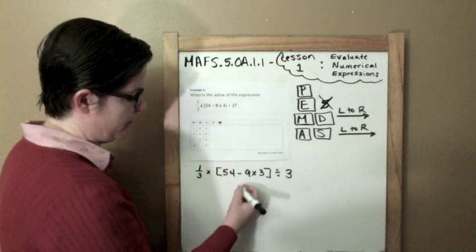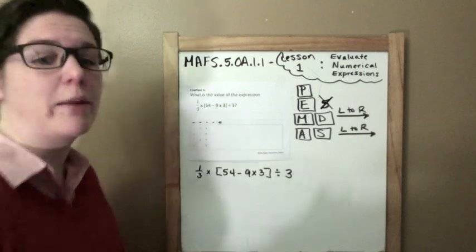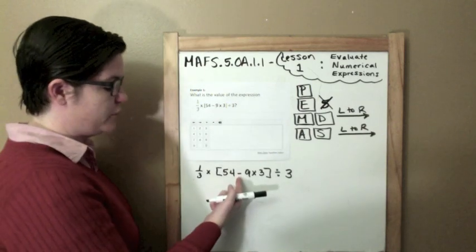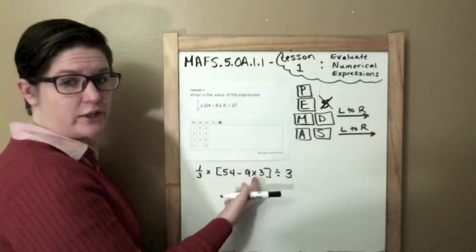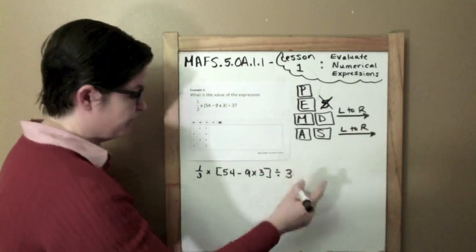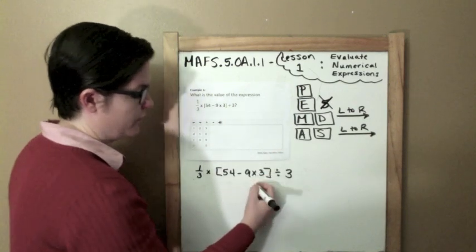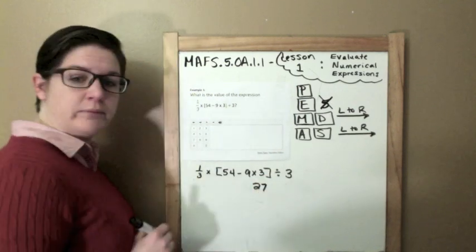So our first step, we're going to work on our parentheses or the bracket. Here's the bracket. So I'm going to bring this down first. Now, inside of the bracket, I have more than one operation going on. I have subtraction and I have multiplication. And according to PEMDAS, I would do multiplication first. So my first step is going to be 9 times 3, which is 27.